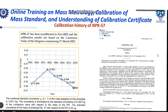NPK 57 has been recalibrated in November 2022, and the calibration results are now based on the consensus value of the kilogram commencing from the 1st of March 2023, which is the second consensus value. Looking at the trend, when we first received NPK 57, its nominal value was 1 kg minus 0.054 mg. With subsequent calibrations we found that value has been changing.